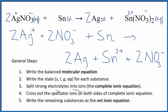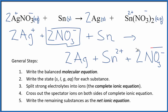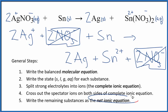Now we can cross out spectator ions — they're on both sides of the complete ionic equation. Looking at the reactants and products, I see 2 Ag⁺ and 2 Ag. The silver ion is different than solid silver, so we can't cross that out. But we do have two nitrate ions in both the reactants and the products — we can cross those out. Those are the spectator ions. Then we have tin and tin-2 plus, so we can't cross that out. What's left after crossing out the nitrates is the net ionic equation for AgNO₃ plus Sn.